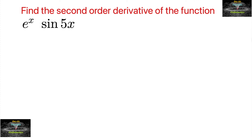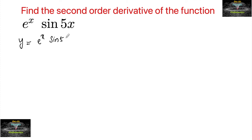Find the second order derivative of the function e to the power of x into sin 5x. Let us write y is equal to e power x into sin 5x. Now first we will differentiate.